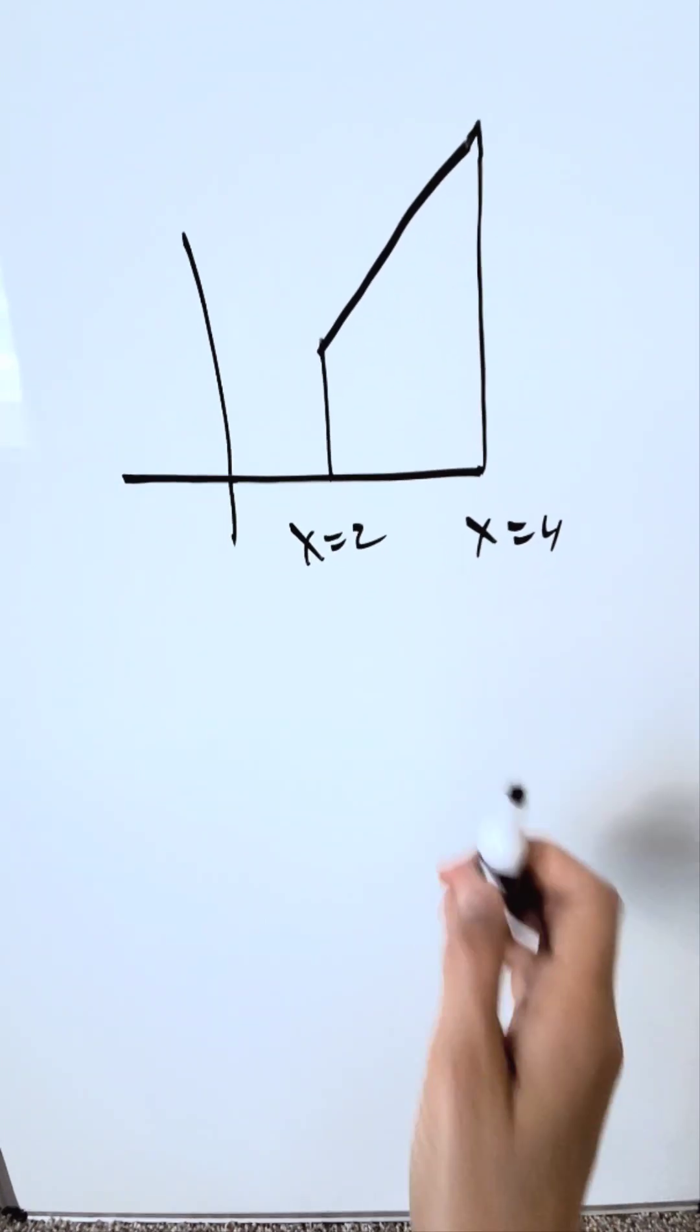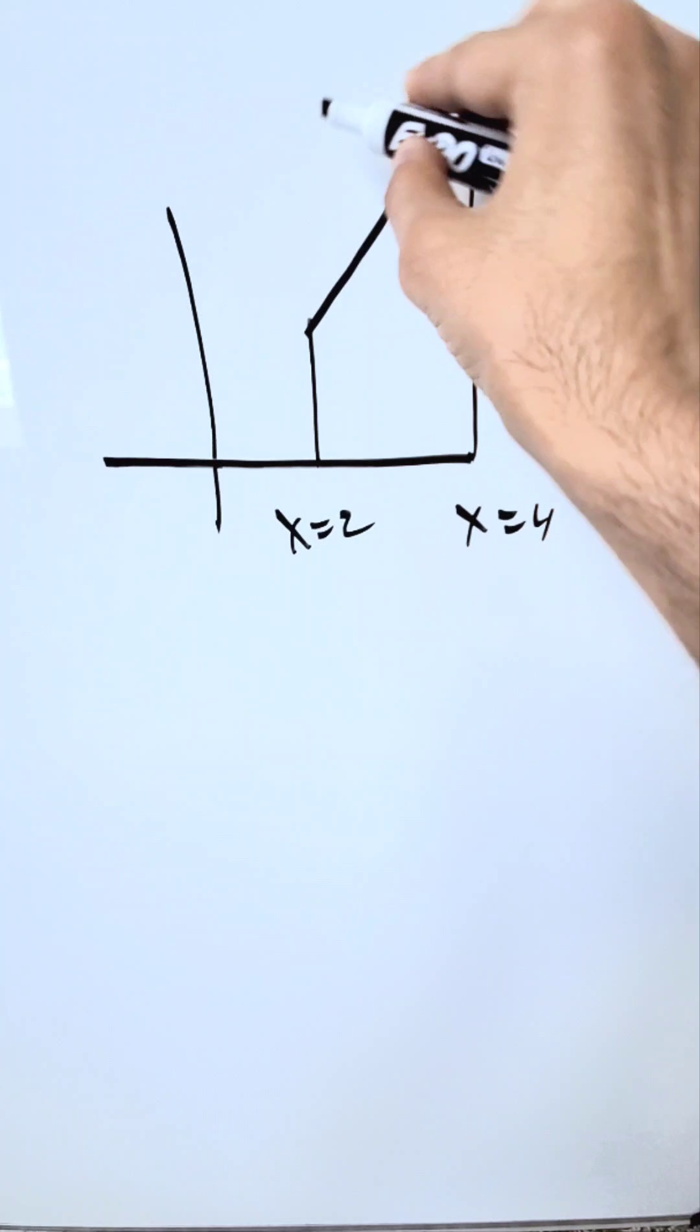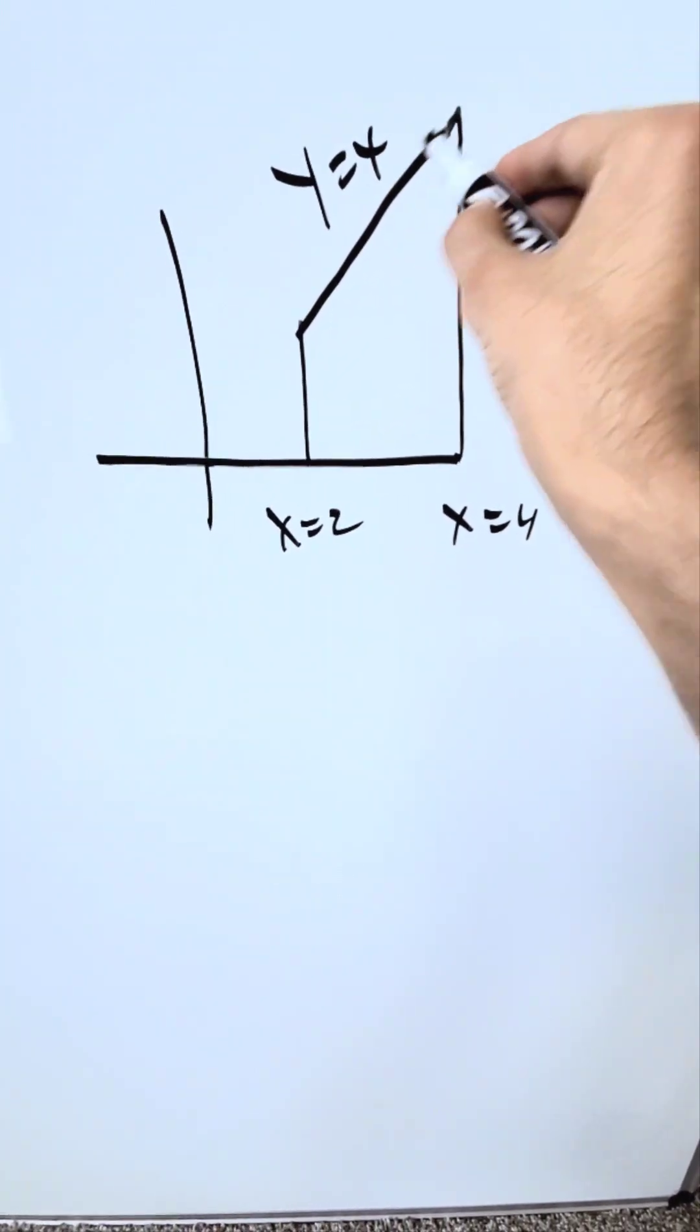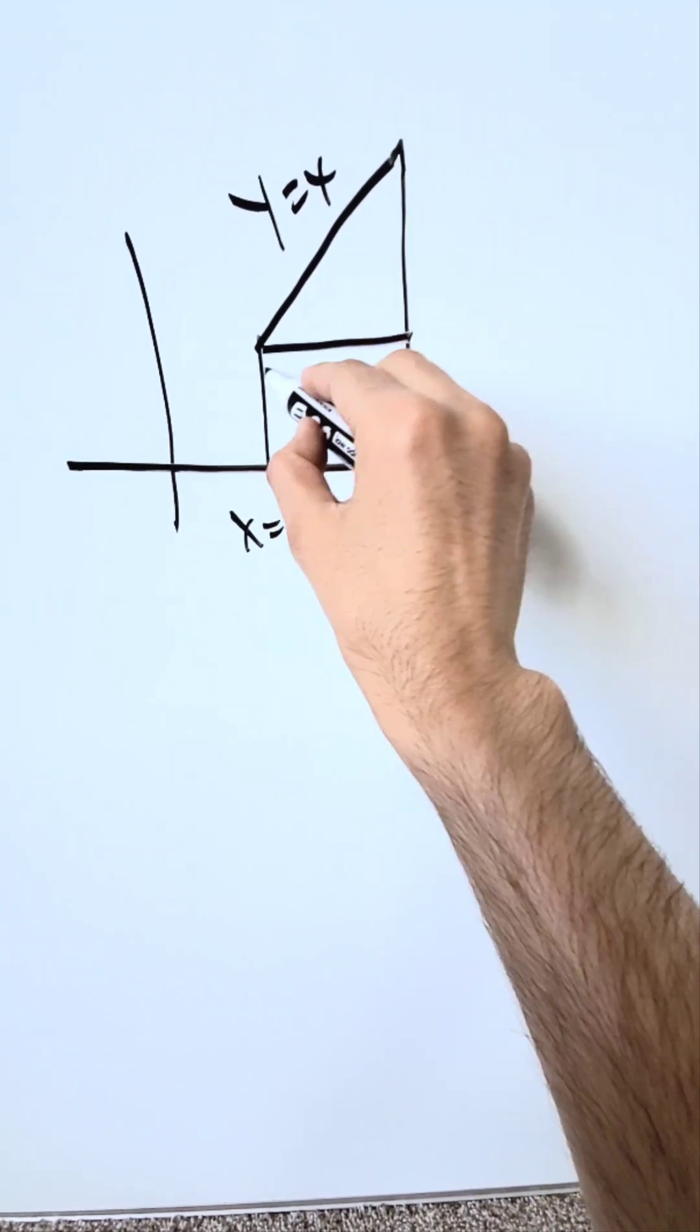Look over here at this trapezoidal region. x equals 2 vertical line, x equals 4 vertical line. We'll call this y equals x, and it'll come right through the origin if you continued it. y equals 0, your x-axis, you have a trapezoidal region.